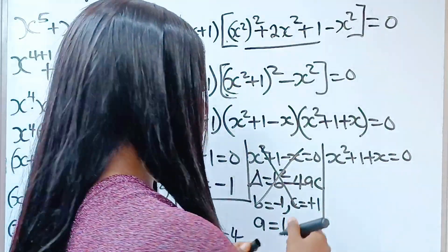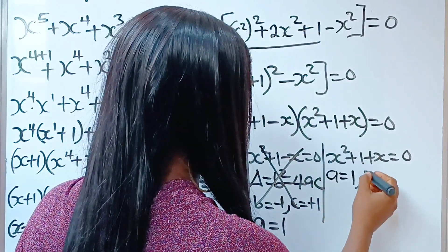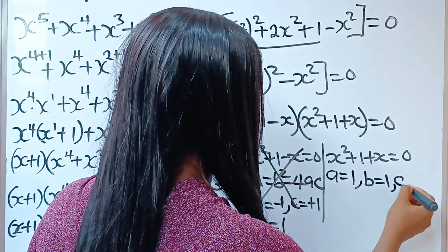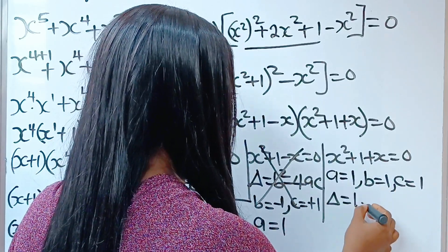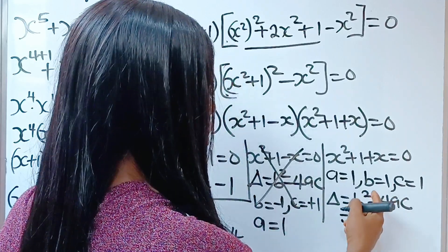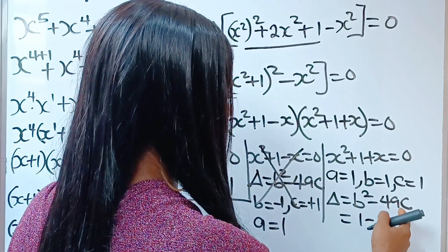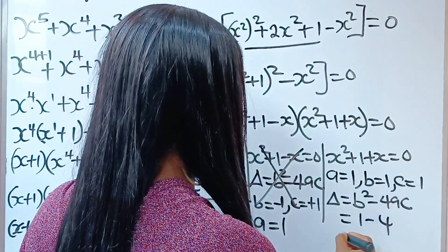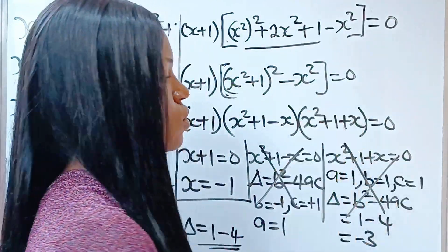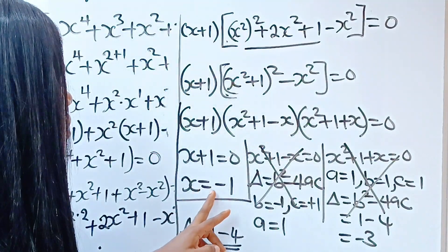Now, let's check the other one. Here, our a is 1, the coefficient of x squared. Our b is the coefficient of x, which is 1. And our c is also 1. Let's check the discriminant, which is equal to b squared minus 4ac. Our b is 1 — 1 squared gives us 1. And 4 times a times c is 4 times 1 times 1, which is 4. We still get minus 3, which is less than 0, and also no real roots. Therefore, the only real root is x equals minus 1.